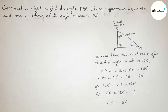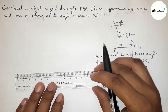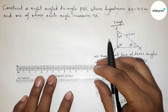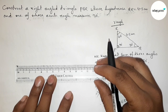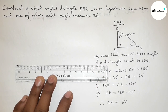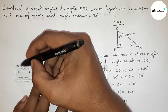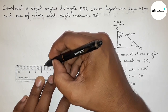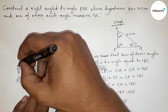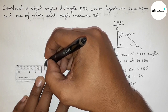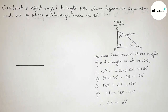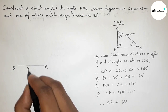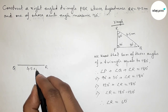Now applying this to construct the right-angle triangle. First, we draw the hypotenuse QR equals 4.5 centimeters — starting from 0 and marking the 4.5 centimeter line segment. Labeling the endpoints as Q and R.